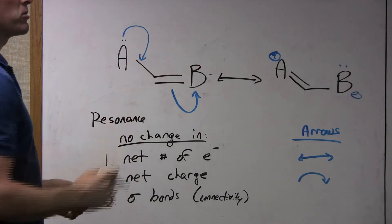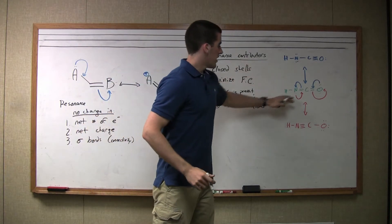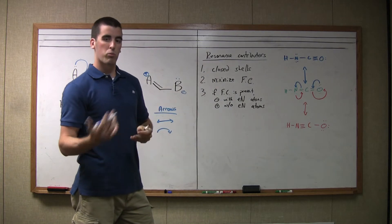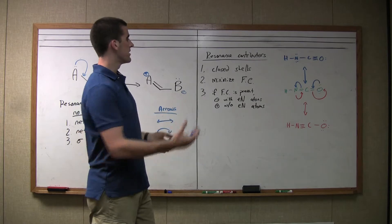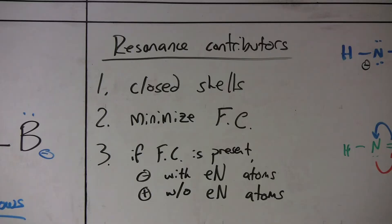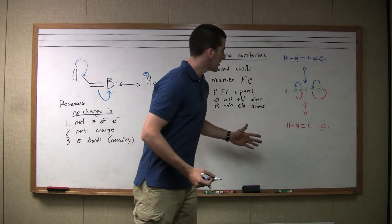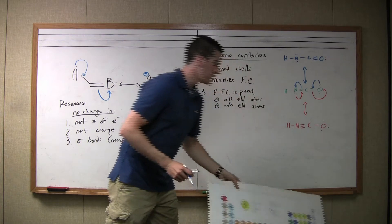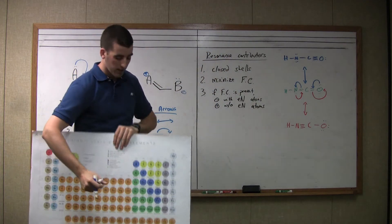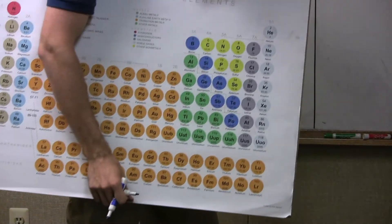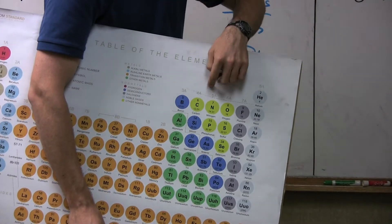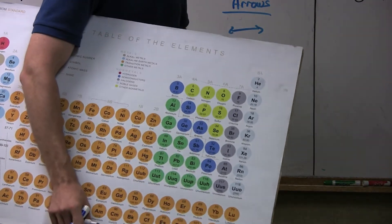Now we're going to apply the three conditions to resonance contributors and rank them. The criteria are: do the contributors all have closed shells? If they don't, they'll be ranked last. We also want to minimize formal charge — a contributor without a formal charge takes precedent over ones that do have formal charges. If a formal charge is present, you want the negative charge on the most electronegative atom, and the positive charge on the least electronegative atom. In our example with nitrogen and oxygen, the trend of electronegativity moves to the right and upward on the periodic table, so oxygen is more electronegative than nitrogen. Therefore, if a charge is present, a negative charge should be on the oxygen and a positive on the nitrogen.